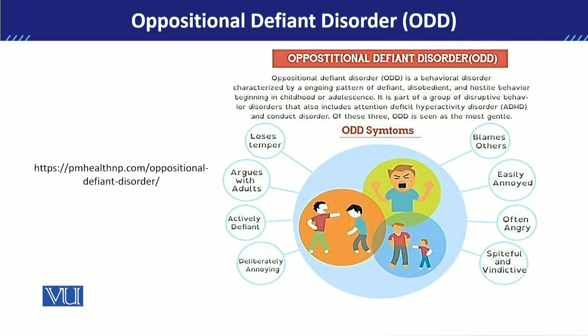Hurtful behavior या vindictive behavior — जिसका मतलब है mean behavior — ये बहुत easily ऐसे behavior exhibit करते हैं जिससे दूसरे लोग बहुत आसानी से hurt हो जाते हैं। इनके जितने भी behavioral problems होते हैं, उनसे इनकी interpersonal relationships effect होना शुरू हो जाती हैं — अपने peers के साथ, siblings के साथ, और parents के साथ भी।